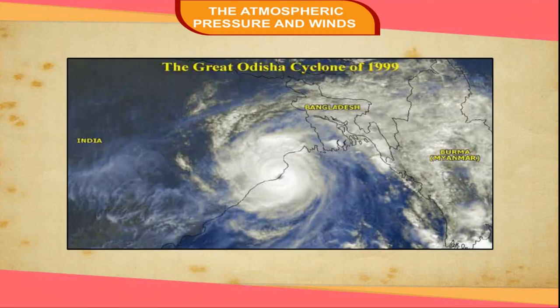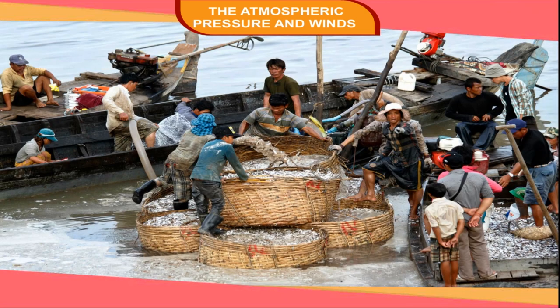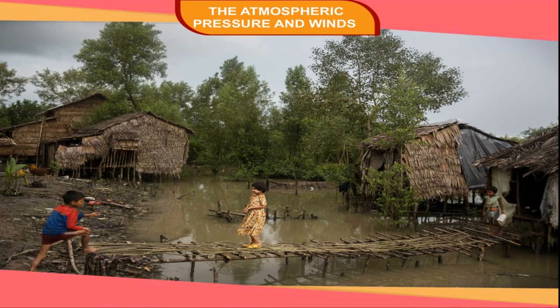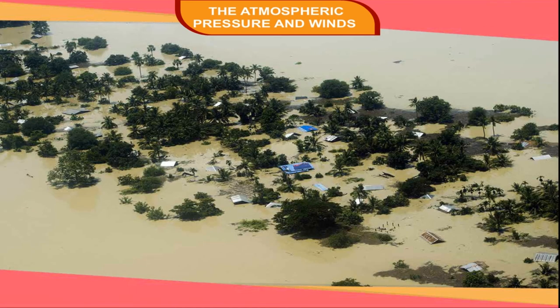Super Cyclone 1999: A severe cyclone hit Odisha on 29 October 1999 with a wind speed of nearly 300 km per hour and incessant rains that lasted for about 48 hours. The region hit by the cyclone was inhabited by poor fishermen who lived in thatched huts. Their homes were destroyed by the strong winds and flooding. More than 10,000 people were killed and 15 million people were left homeless. Vast areas of farmland were flooded, causing damage to standing crops. This was perhaps the most destructive cyclone in India in this century.